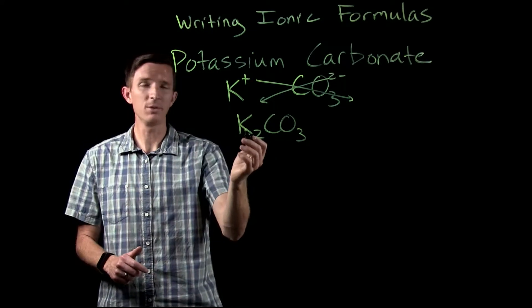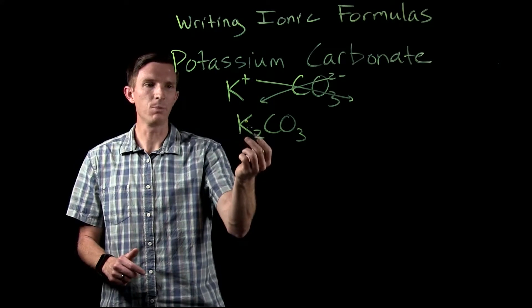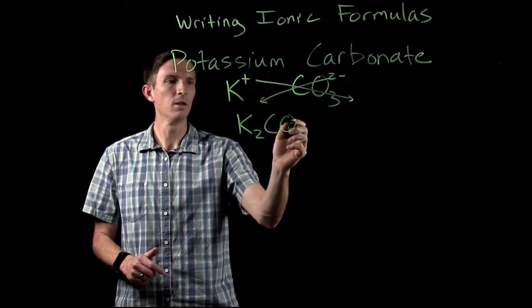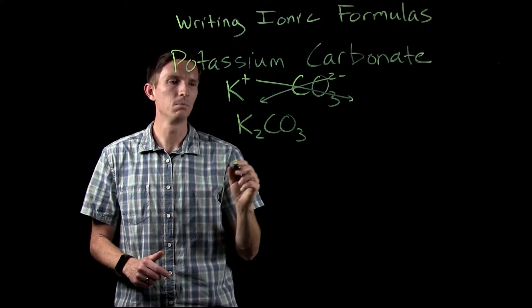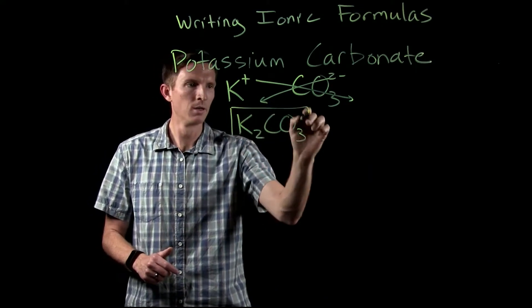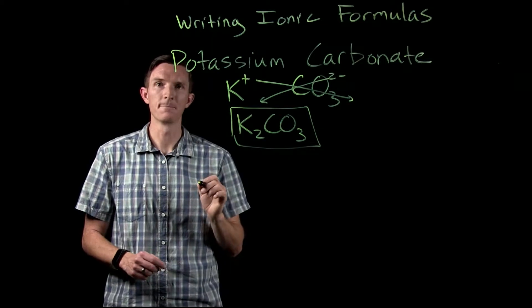We see this is going to be electrically neutral: plus 2 for both of our potassiums together, negative 2 for our carbonate. So this would be our chemical formula for potassium carbonate.